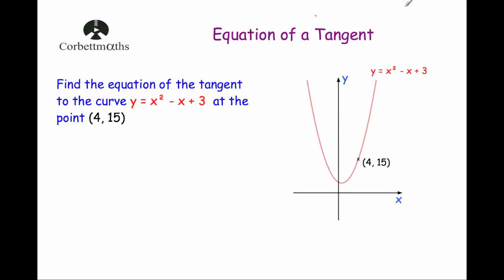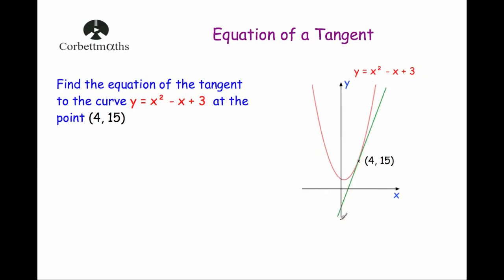Hi, welcome to ScorpioMath's video on working out the equation of a tangent. So here we've got a curve, y equals x squared minus x plus 3. We've been asked to find the equation of the tangent to this curve at the point (4, 15), so this point here. I'm going to draw that tangent now — there's that green line, that tangent — and we've been asked to find the equation of that green line.